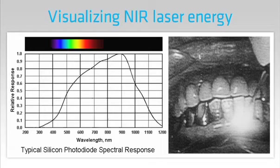With an infrared diode laser, the beam is invisible, but we can see it using a conventional video or still camera. Because of their much wider spectral response, these devices see near infrared light extremely well.